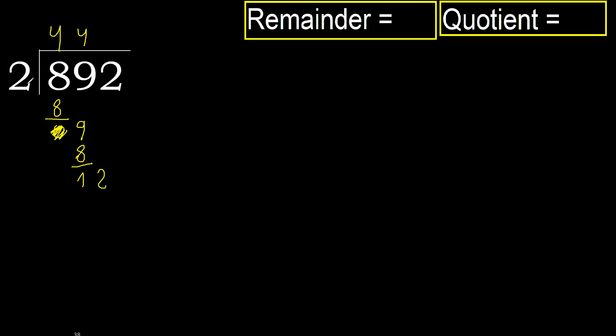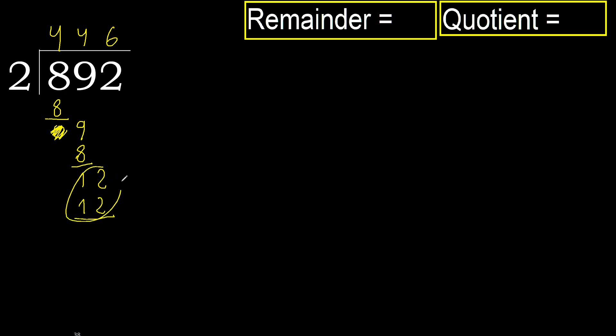Next: 12. 2 multiplied by 6 is 12. That is not greater, so subtract.